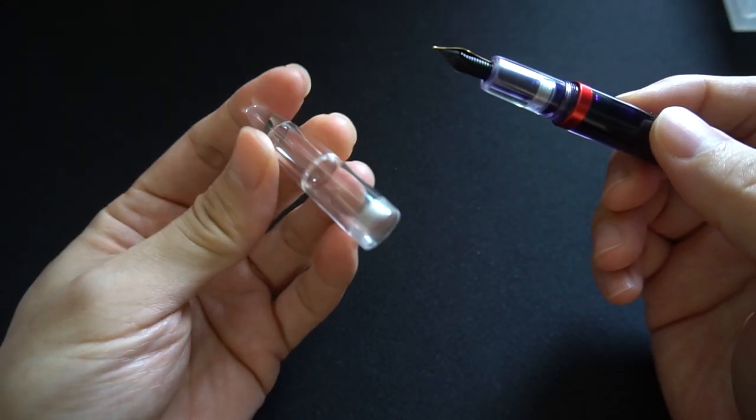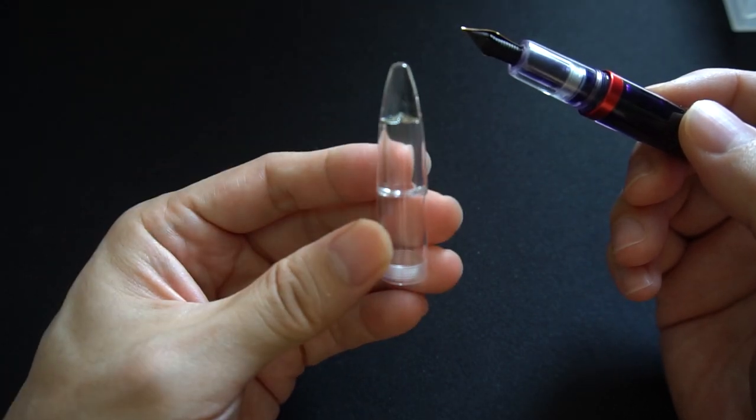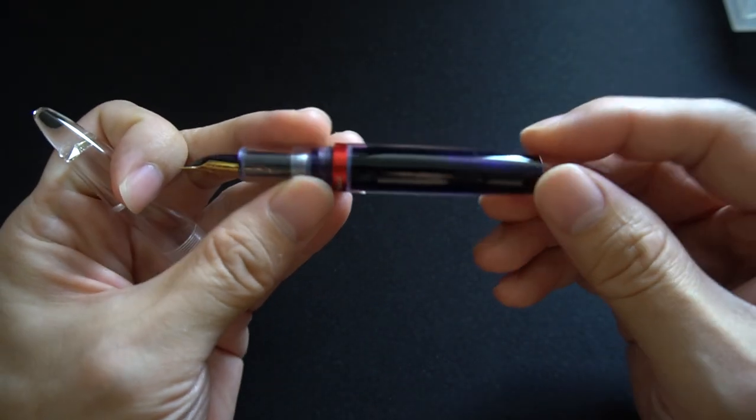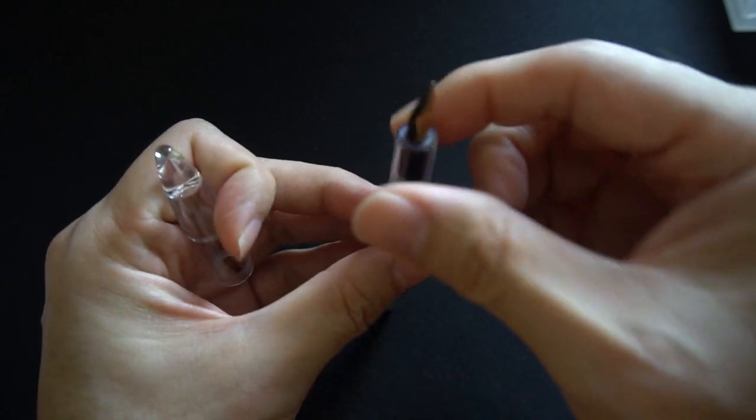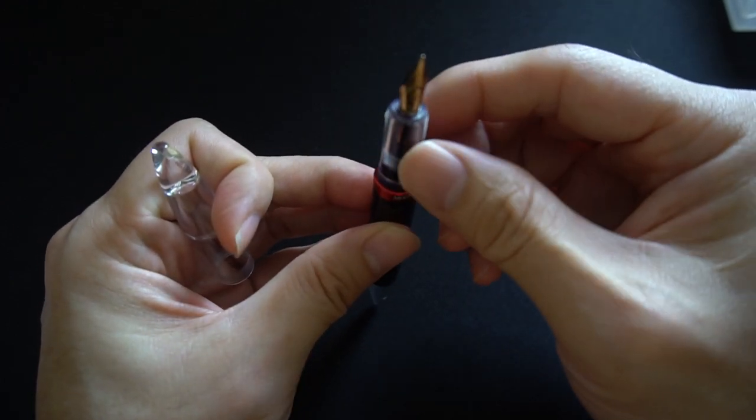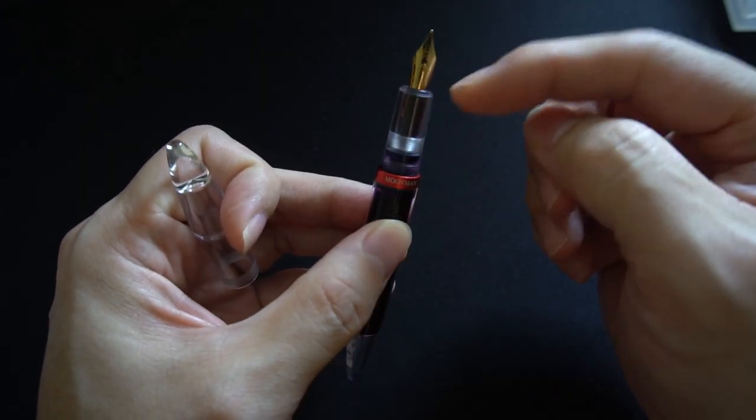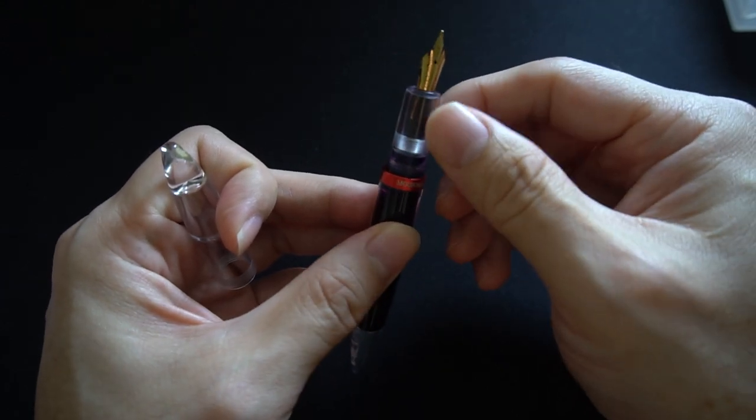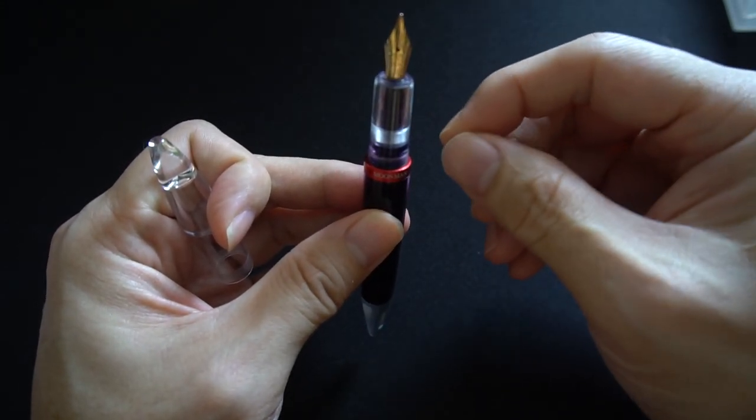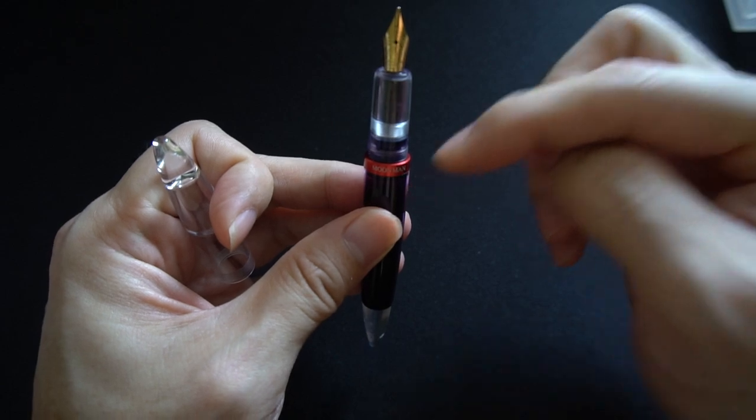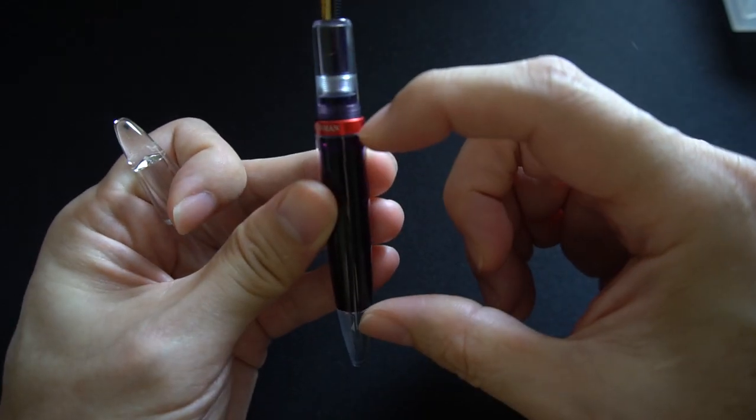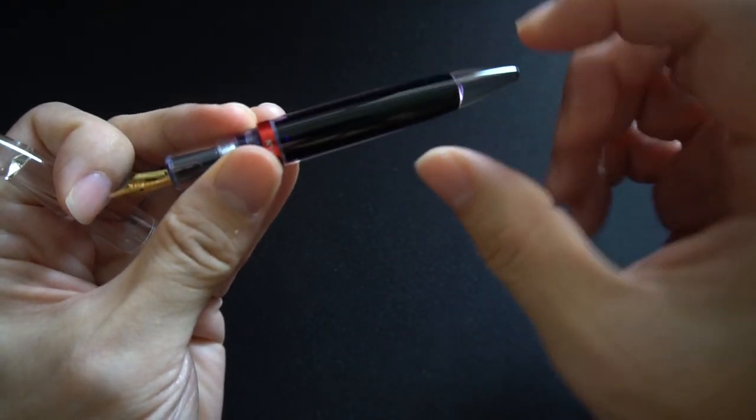Besides that, if you open up the cap, it's just a transparent cap. Down here is where I unscrew the section up here and I use the eyedropper which I showed you earlier to put ink into this section down here. As you can see, it does take a lot of ink.